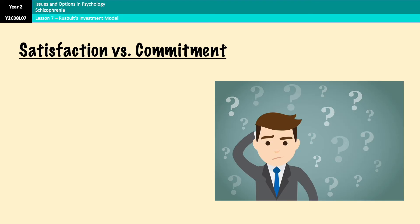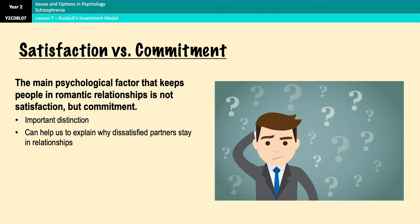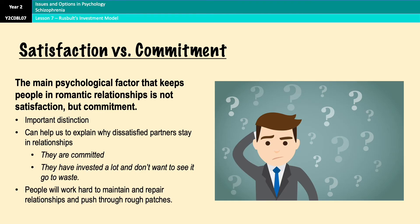It's important to understand that the main psychological factor keeping people in a romantic relationship is not satisfaction, but commitment. This distinction helps explain why dissatisfied partners stay in relationships — they feel committed due to high levels of investment and don't want to see that go to waste. They might have children together, a shared house, joint finances. So people will work hard to maintain and repair a relationship and push through any rough patches they might be experiencing.